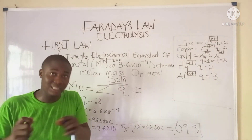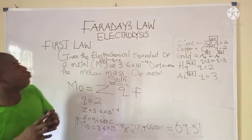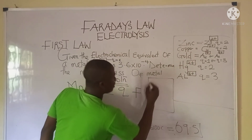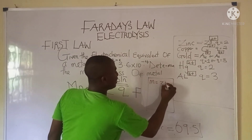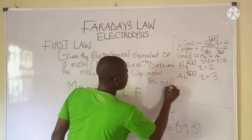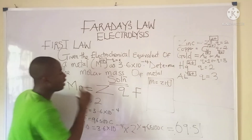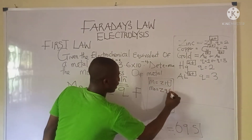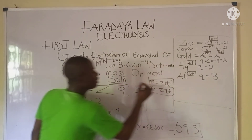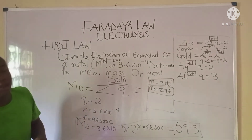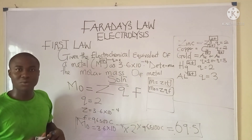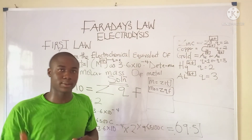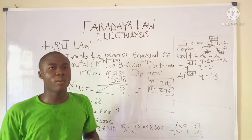To recap: we covered the formula m = zIt as the first representation of Faraday's first law, solved a current problem, and also derived that molar mass = zqF, applying it to find a molar mass of 69.5 g/mol. All these formulas should be noted when solving problems on this topic. Thanks for watching, and don't forget to subscribe for more videos.